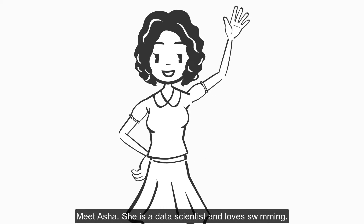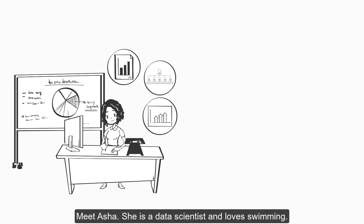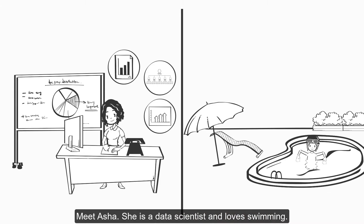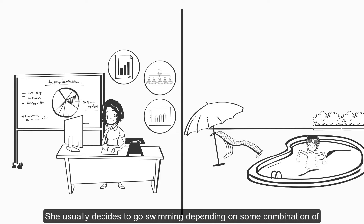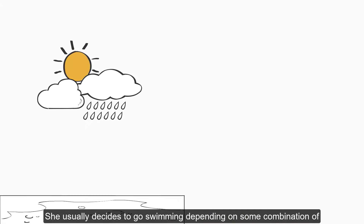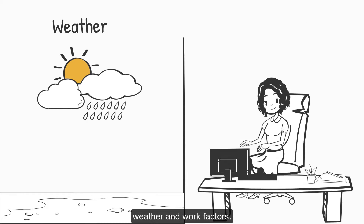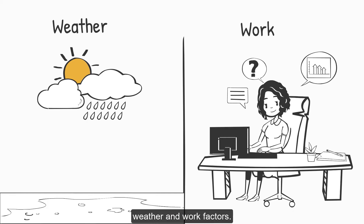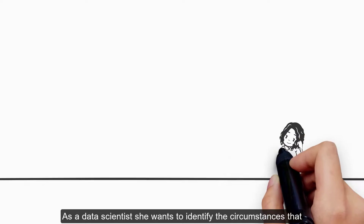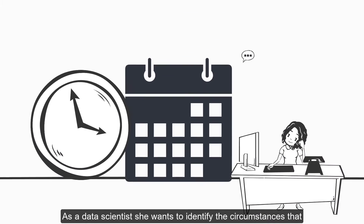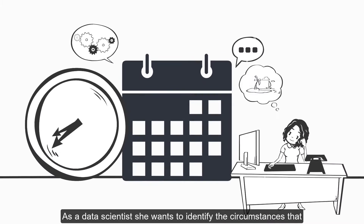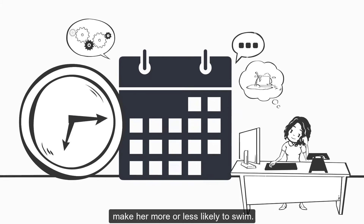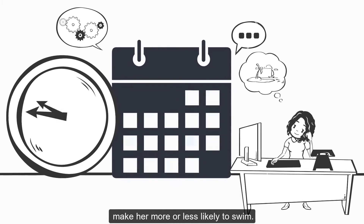Meet Asha. She is a data scientist and loves swimming. She usually decides to go swimming depending on some combination of weather and work factors. As a data scientist, she wants to identify the circumstances that make her more or less likely to swim.